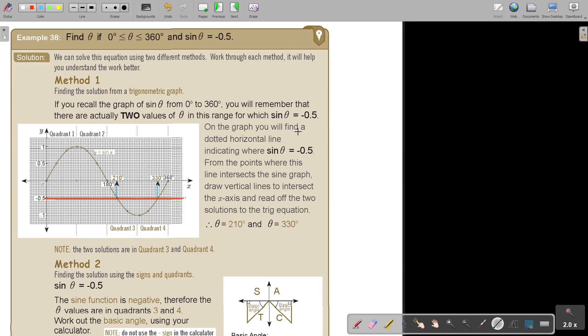On the graph, you will find a dotted horizontal line indicating where sin θ = -0.5. From the points where this line intersects the sin graph, draw the vertical lines to intersect the x-axis and read off the two solutions. θ will be 210°, θ will be 330°.